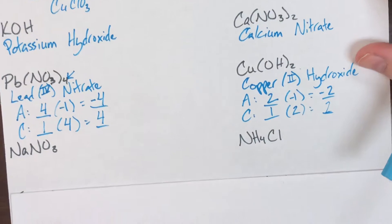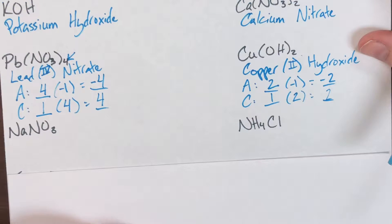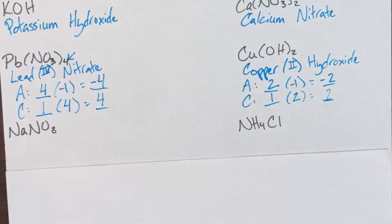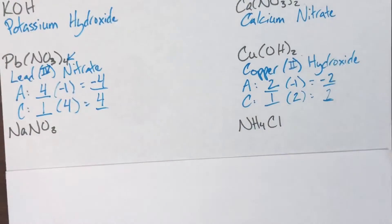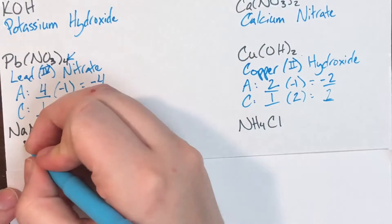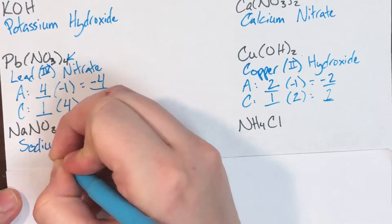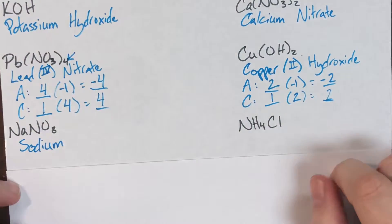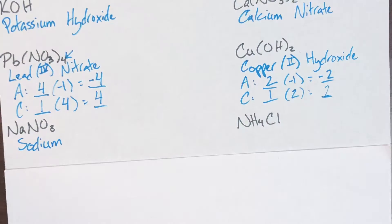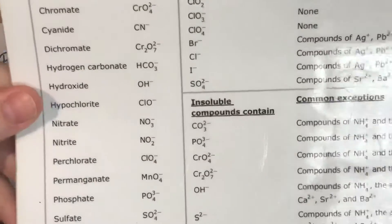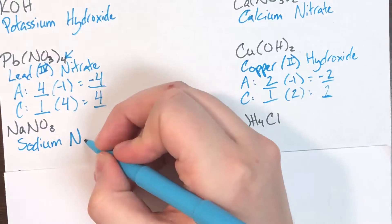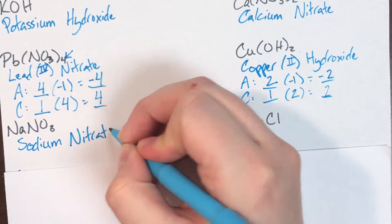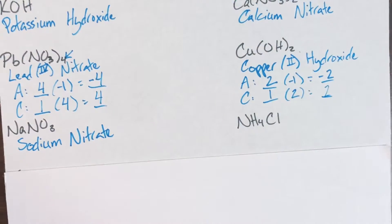NaNO₃: Na is sodium and is in the first column, making it representative, so I just write sodium. NO₃ is nitrate. The compound name is sodium nitrate.